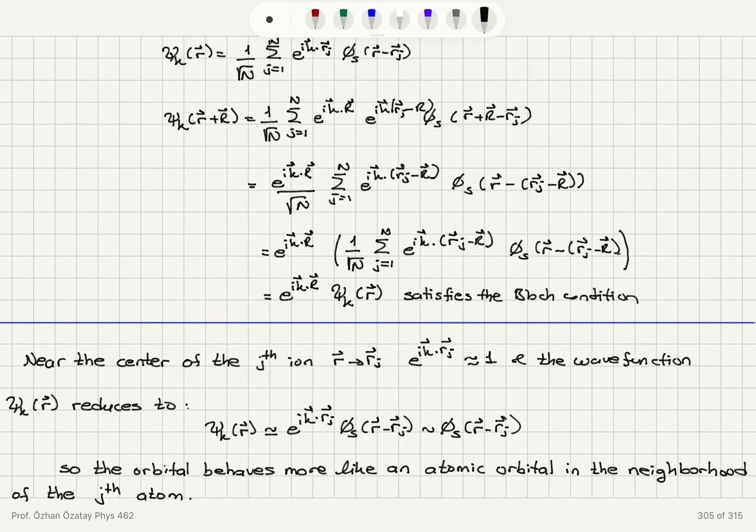So this basically says that I have obtained the same wave function in the parentheses and so if you replace rj minus capital R with rj basically it has the same form.